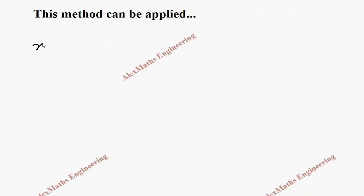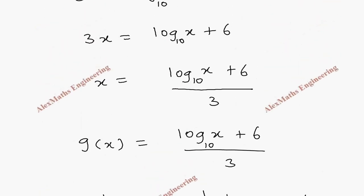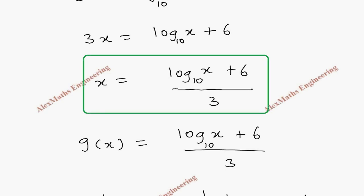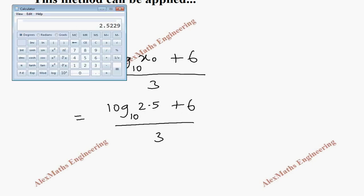Now we have to choose a value of x₀ between 2 and 3. Let's take x₀ equals 2.5. We have to find x₁, which is log of x₀ base 10 plus 6, whole divided by 3. Using this iteration function, we compute: log 2.5 base 10 plus 6, divided by 3. Using the calculator, 2.5 log of that value plus 6, whole divided by 3 gives 2.13264.